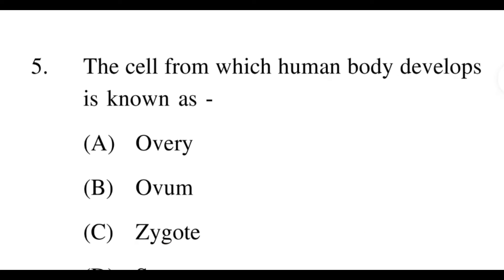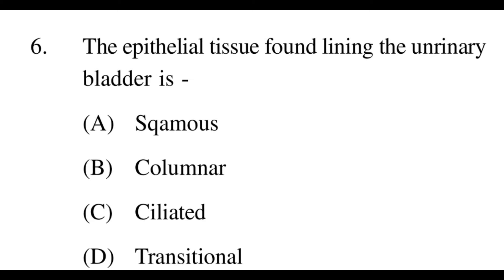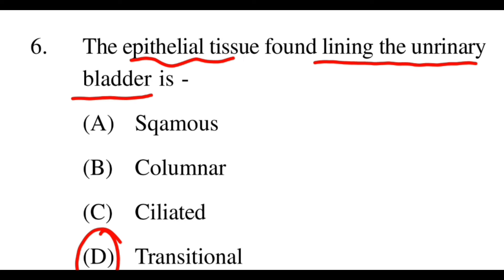Next question: The epithelial tissue found lining the urinary bladder — which is that epithelial tissue? Options: A: squamous, B: columnar, C: ciliated, D: transitional. The right option is D, transitional. Transitional epithelial tissue lines the urinary bladder.